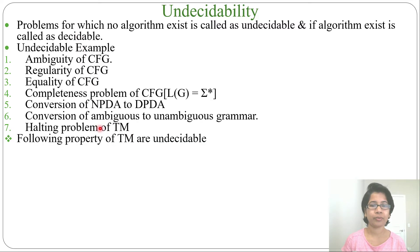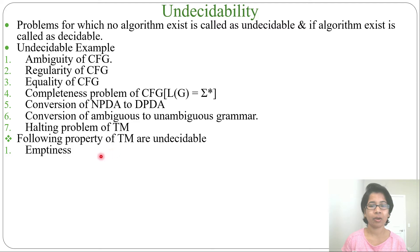These are some problems for which no algorithm exists — so these are undecidable. Next, some properties of Turing machine which are undecidable. First is emptiness: whether a Turing machine accepts the empty language or accepts some string is undecidable. There is no algorithm for checking emptiness. In case of context-free language, algorithms exist for emptiness, finiteness, and membership. But in the case of Turing machines, no algorithm exists for emptiness, finiteness, and membership.